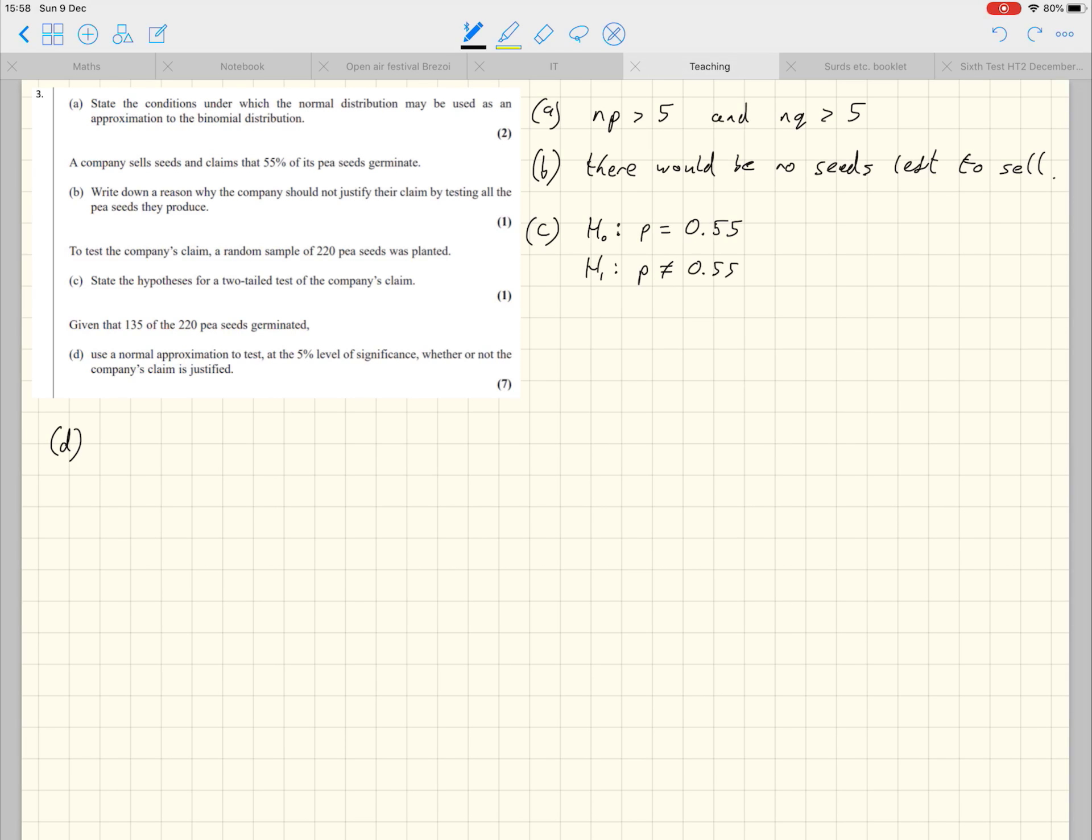So one thing we should go back to, part C, it asks for the hypotheses, and we've just written P. But note that nowhere in the question does it define a P. So in statistics, if you start using a new variable, you need to write down what it means. So we're going to go back up here and write what P means, because quite often there's a mark for this. You can either put it here in part D, or you can put it back up in part C, you'll still get the marks for it. So P is either the probability that a randomly selected seed will germinate, or the proportion of seeds that will germinate, I should say.